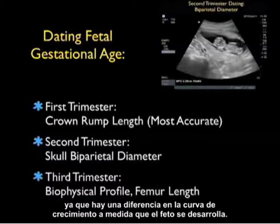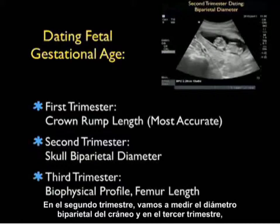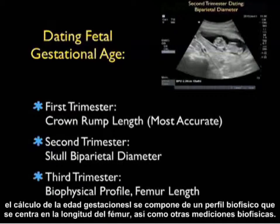There's a difference in the growth curve as the fetus develops. In the second trimester, we'll measure the skull biparietal diameter. In the third trimester, the dating is composed of a biophysical profile focusing on the femur length as well as other biophysical measurements.